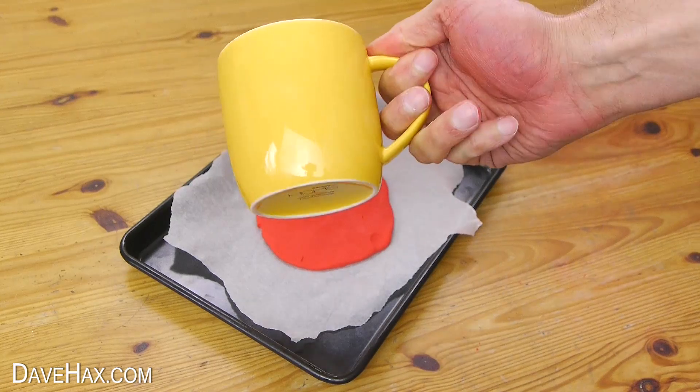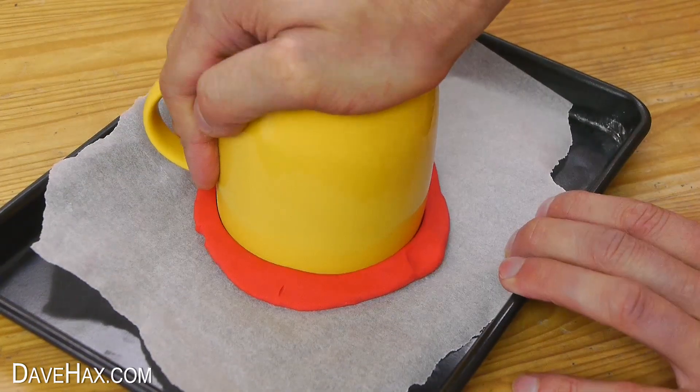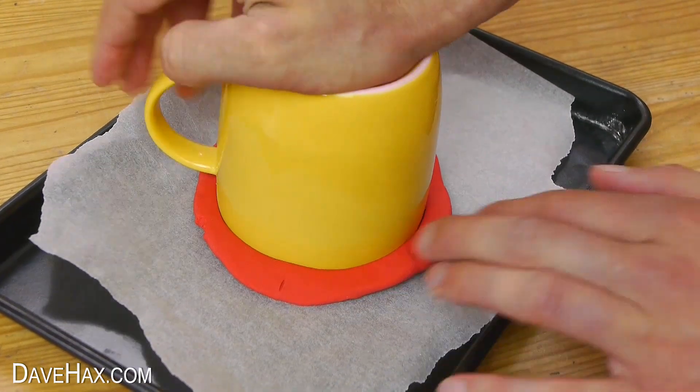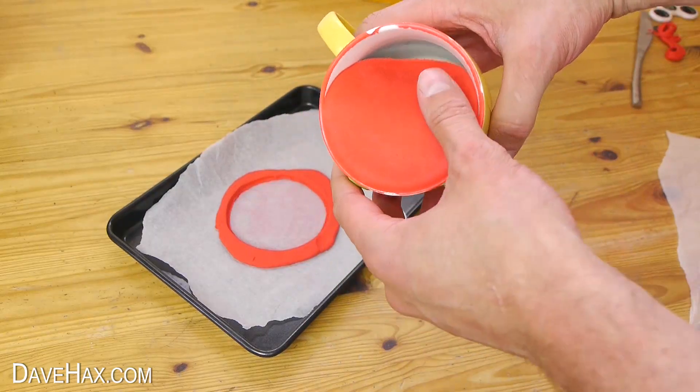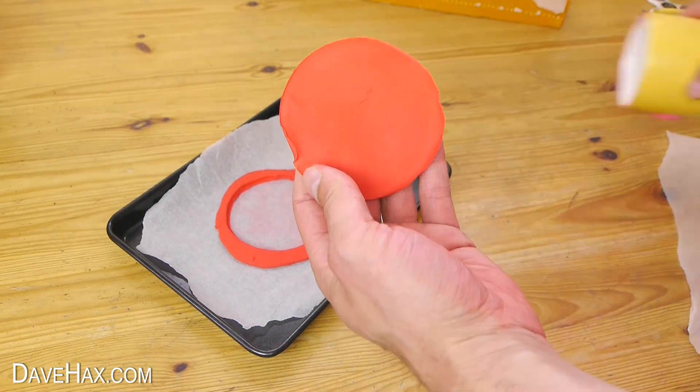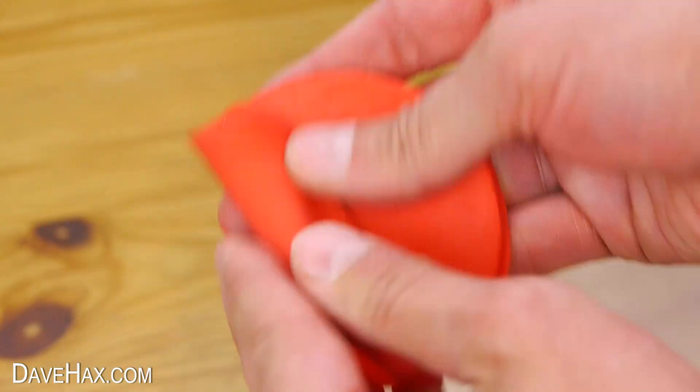Next we need to take a mug and cut a hole in the middle of the plasticine like this. Remove the middle and roll it up into a sausage shape.